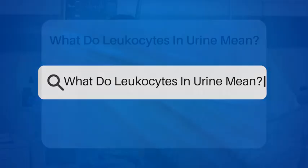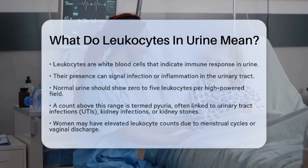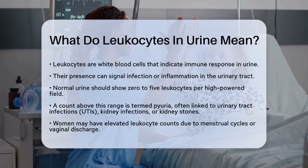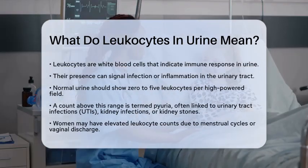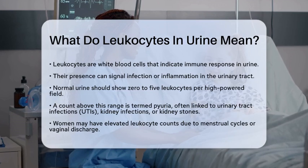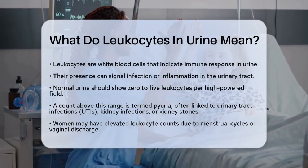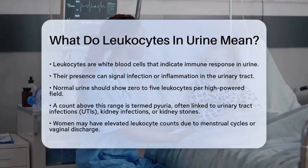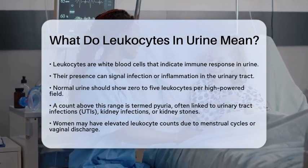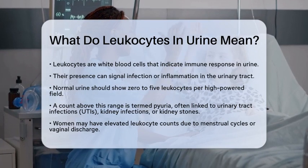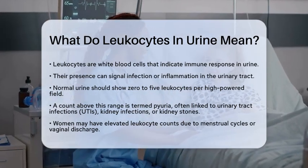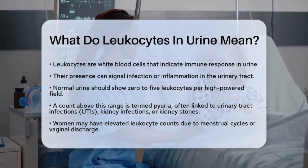What do leukocytes in urine mean? Have you ever wondered what those white blood cells in your urine might indicate? Let's break it down together. When we talk about leukocytes, we are referring to white blood cells that play a vital role in your immune system. Their presence in urine can signal an immune response to an infection or inflammation in the urinary tract. This is important for nursing practice, as recognizing this finding during urinalysis can lead to timely interventions and better patient care.